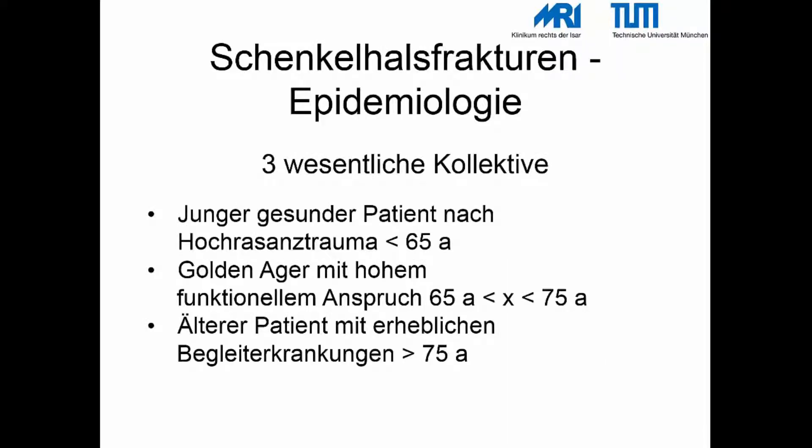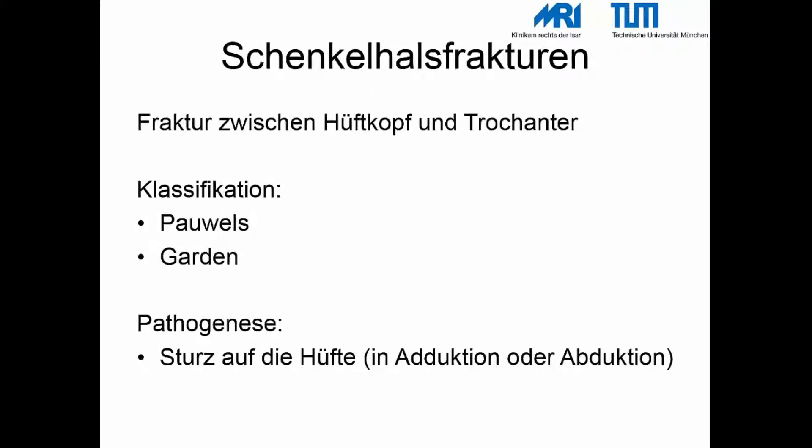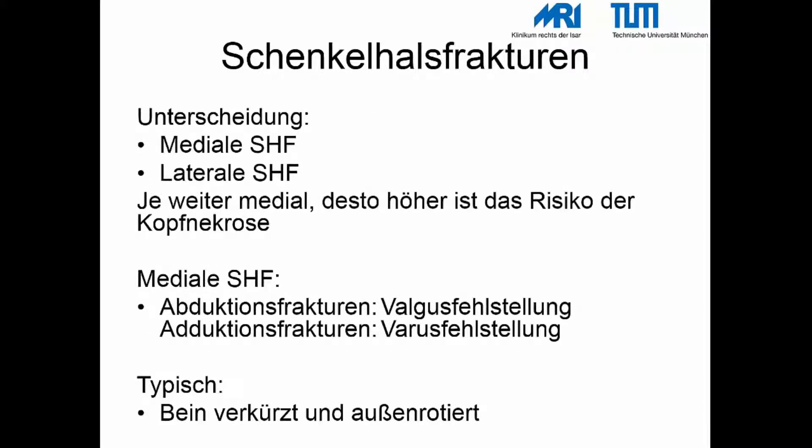Schenkelhalsfrakturen betreffen im Wesentlichen drei Kollektive: zum einen junge, gesunde Patienten nach Hochrasanztrauma, dann die sogenannten Golden Ager mit hohem funktionellen Anspruch zwischen 65 und 75 Jahren, und ältere Patienten mit erheblichen Begleiterkrankungen über 75 Jahre. Die Schenkelhalsfraktur ist definiert als Bruchlinie zwischen Hüftkopf und Trochanter Major. Als Unfallursache kommt meist der Sturz auf die Hüfte in Betracht. Je weiter medial die Fraktur liegt, desto höher ist das Risiko der Femurkopfnekrose.